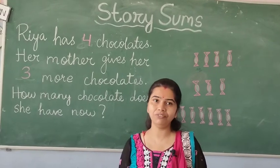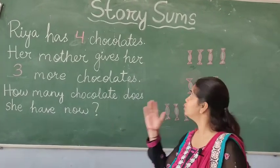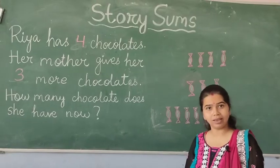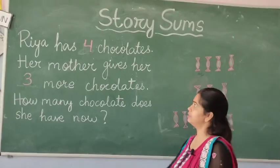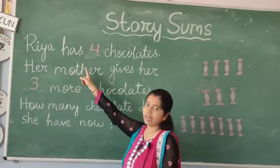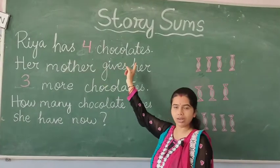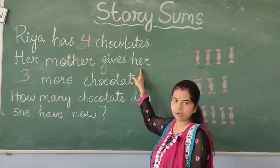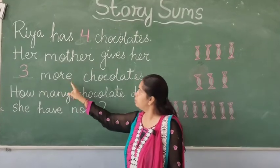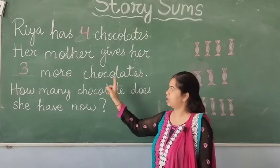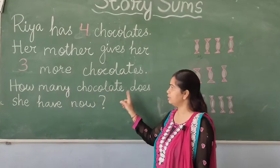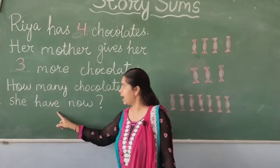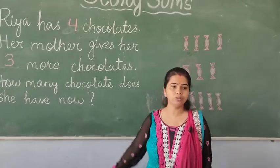So children, today we will learn some story sums. Okay, my first story is: Ria has four chocolates. Her mother gives her three more chocolates. How many chocolates does she have now?